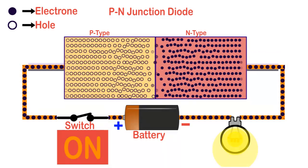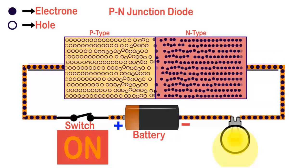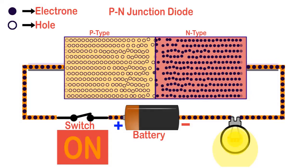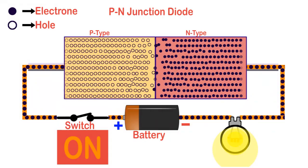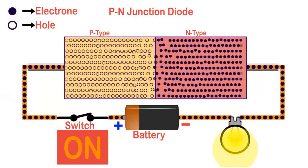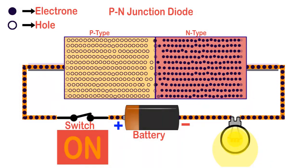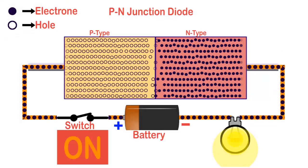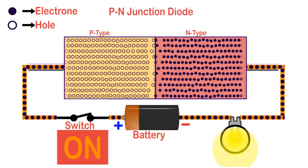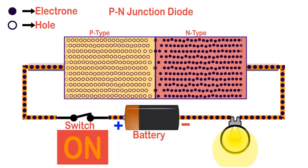This gives independence to a large number of holes and electrons to cross the junction under the influence of the externally connected DC voltage. This leads to flow of current from cathode to anode, known as forward current.